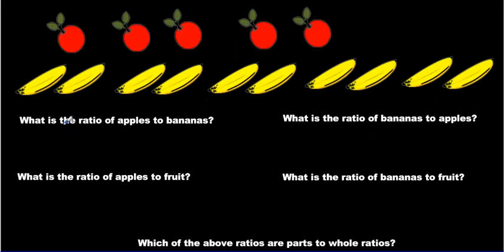Here's another example. What is the ratio of apples to bananas? What is the ratio of apples to bananas? Well, that's simple. We have 5 apples. Apples comes first.